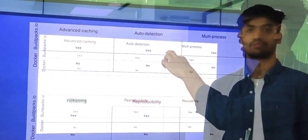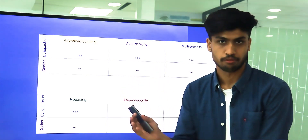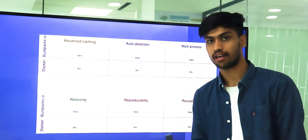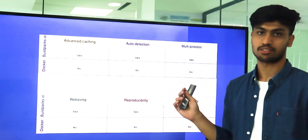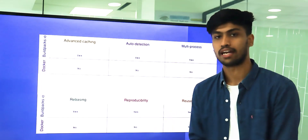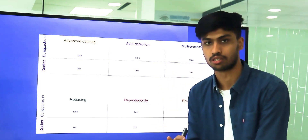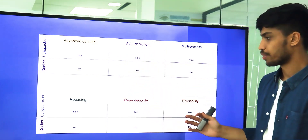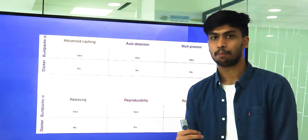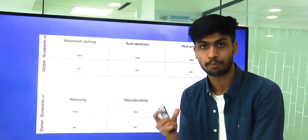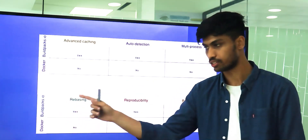Auto detection happens in buildpacks.io, not in Docker. Next is multi-process: every layer has its own entry point, which is why it is called multi-process — this does not happen in Docker, only in buildpacks.io. Then there is rebasing. Suppose we have a running container — in Docker we cannot change the base image while it is running, but it can be done in buildpacks.io.